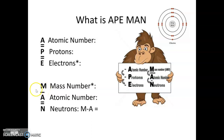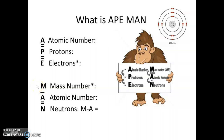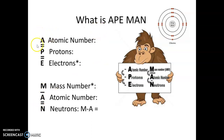For the MAN part: the mass number minus the atomic number is equal to our neutrons. If we know the mass and we know the atomic number, subtracting those gives us the number of neutrons. For example, if magnesium has a mass number of 24 and an atomic number of 12, then 24 minus 12 equals 12 neutrons. So in a neutral atom of magnesium with a mass number of 24, we would have 12 protons, 12 electrons, and 12 neutrons. So APE-MAN: A equals P equals E, and M minus A equals N.